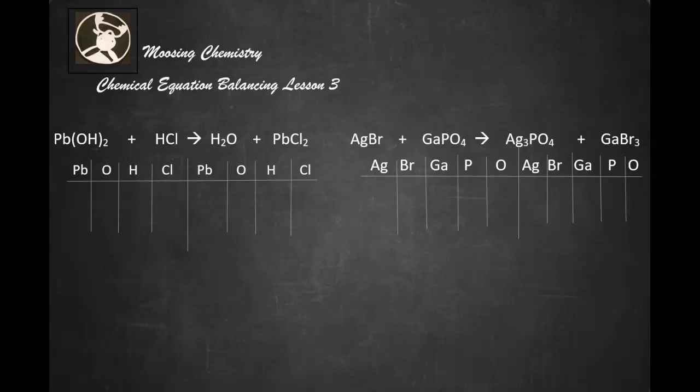How many Pb's do we have? We have one Pb. And now look at this little two here. That distributes to that oxygen there. So we have two oxygens. And we have two hydrogens plus one hydrogen would give us three hydrogens and one chlorine.